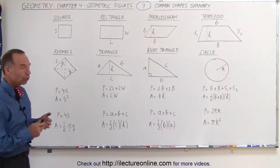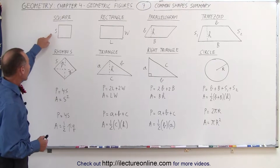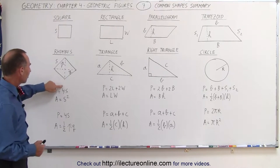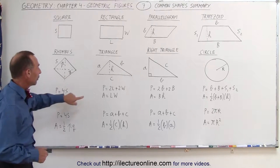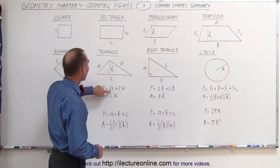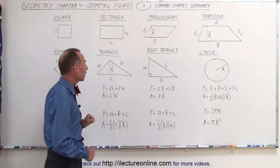Now in each case we're going to show the equation for the perimeter and the area. For the square, the perimeter is four times the side and the area is the side squared. For rectangle, the perimeter is twice the length plus twice the width. For the area, it's the length times the width.